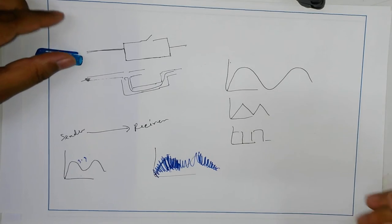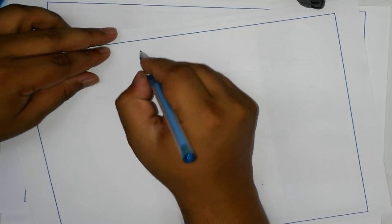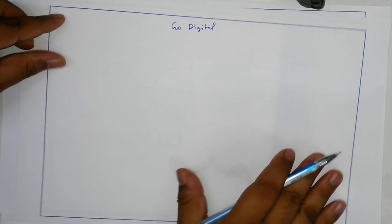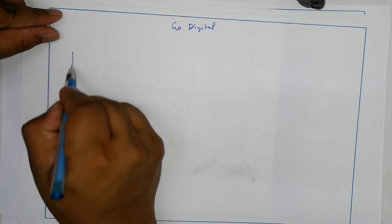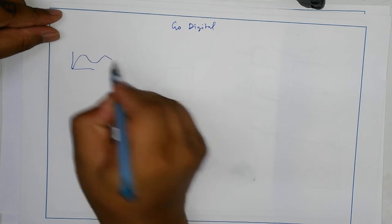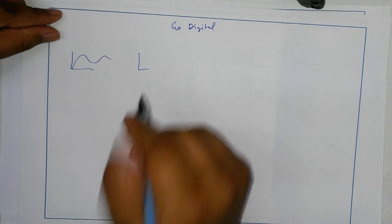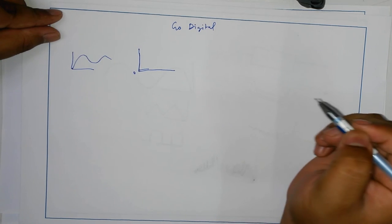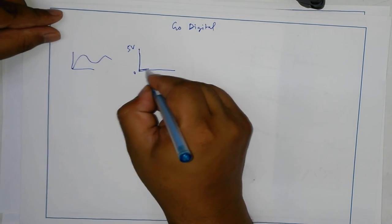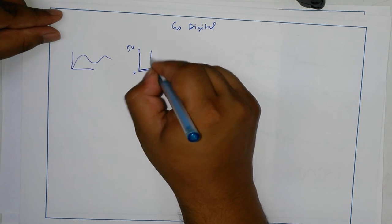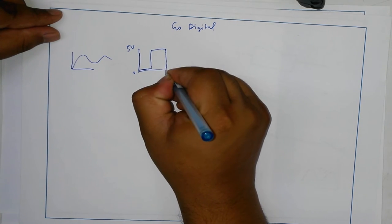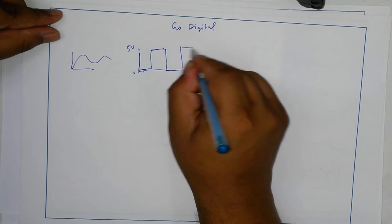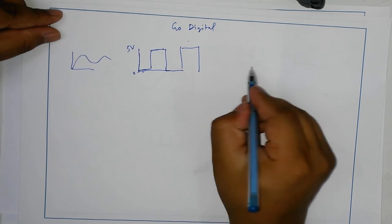We're going to go very simple. The concept of this lecture is go digital. Let's say you have electricity, so electricity is assumed that it's going like this. Instead of this, let's say we have set a point like 0 volt and 5 volt. So whatever I'm sending, it could be 0 volt, 0 volt or 5 volt. It's 5 volt, it's 0 volt. So again, you can send 0 volt or 5 volt.